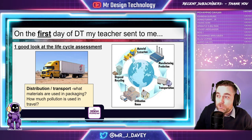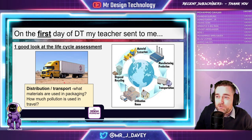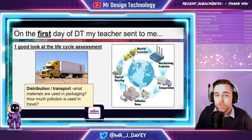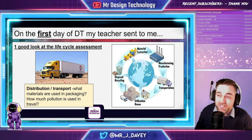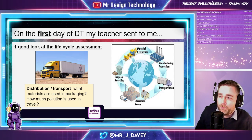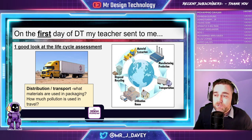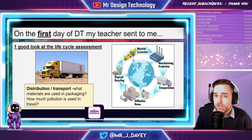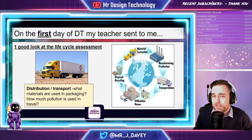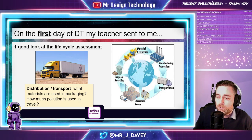Unless we could use biodiesel, which would help reduce that impact on the environment. Or hopefully in the future we can get into a position where we have electric long distance lorries, with power coming from electricity regenerated in a closed loop cycle with solar panels. If you don't know what a closed loop cycle is, have a look at the YouTube channel Student Energy — they've got some fantastic videos. I might drop a few links below on renewable energies so you can have a good look.